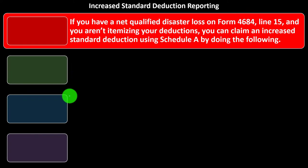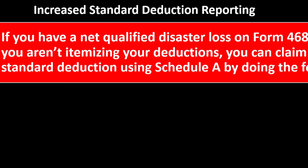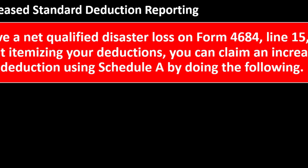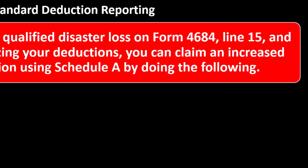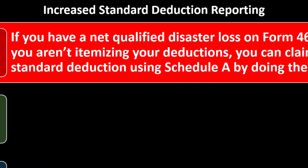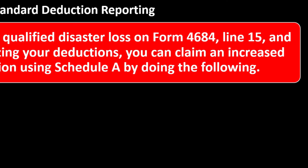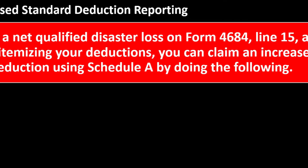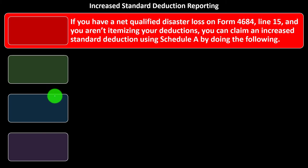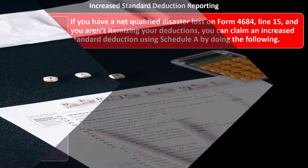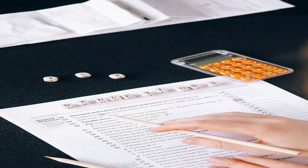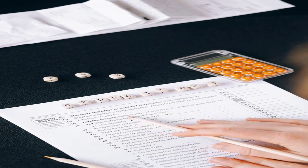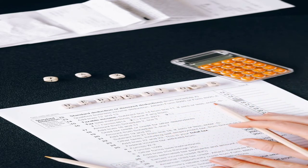Increased Standard Deduction Reporting: if you have a net qualified disaster loss on Form 4684, Line 15, and you aren't itemizing your deductions, you can claim an increased standard deduction using Schedule A. This is an exception to the rule — we typically have either itemized deductions or the standard deduction — but casualty losses, which are in the itemized deductions area, changed a couple of years ago.